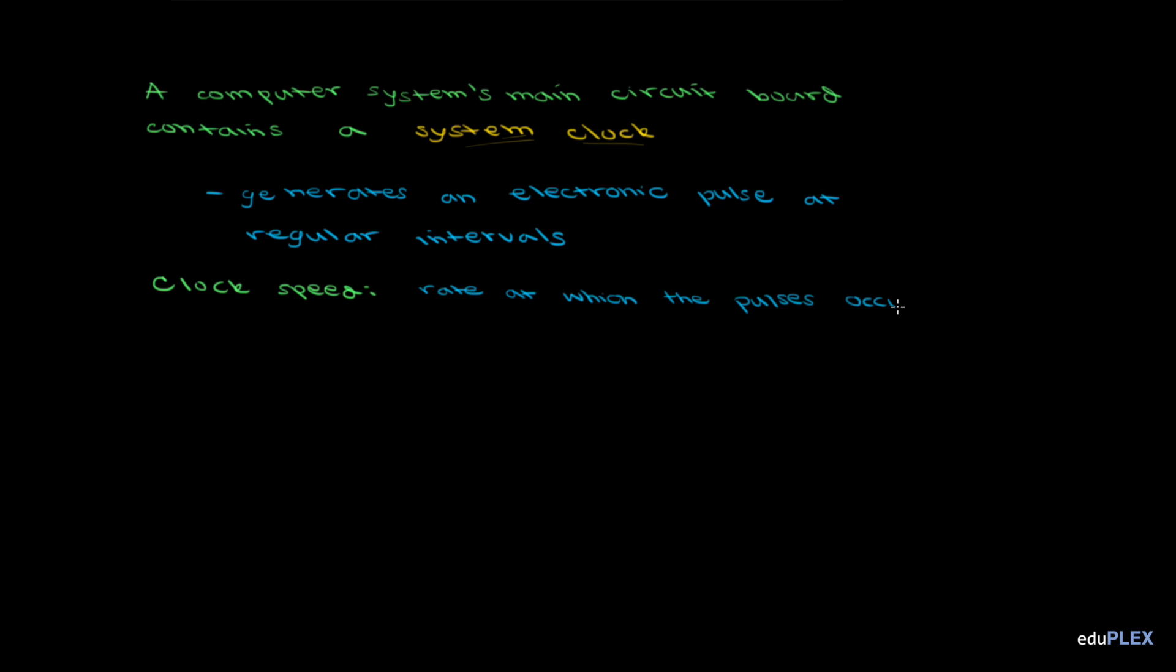or rate at which the pulses occur for an Intel Core i7 processor, can be 2.9 GHz, which means 2.9 billion pulses per second.